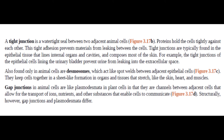Gap junctions in animal cells are like plasmodesmata in plant cells in that they are channels between adjacent cells that allow for the transport of ions, nutrients, and other substances that enable cells to communicate. Structurally, however, gap junctions and plasmodesmata differ.